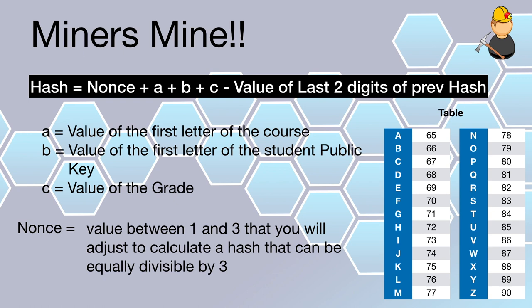The hash is comprised of: nonce + A + B + C minus the value of the last two digits of the previous hash. A is the value of the first letter of the course name — Parks begins with P, so looking up in the table A equals 80. B is the value of the first letter of the student's public key — it was an A, so B equals 65. And C is the value of the grade — in this case an F, which is 70.